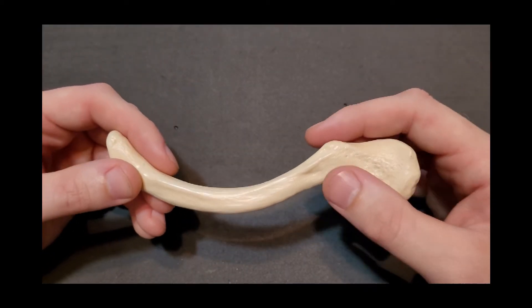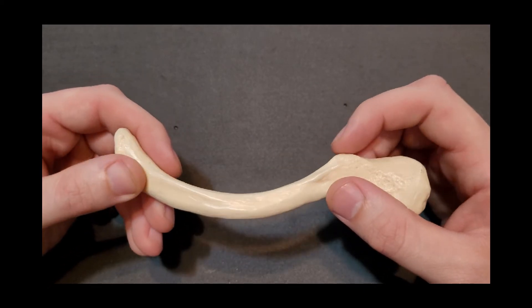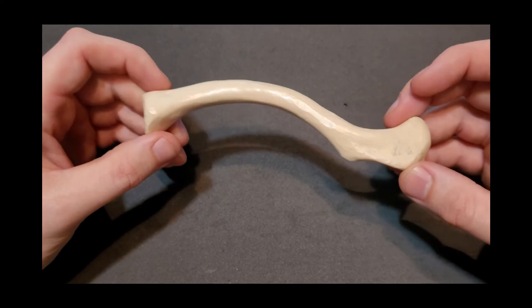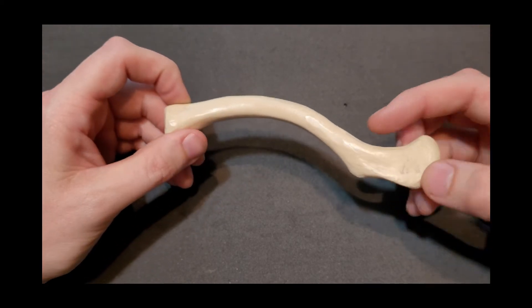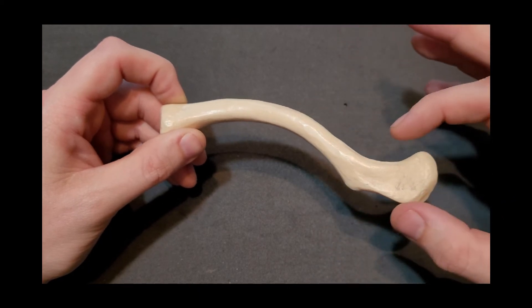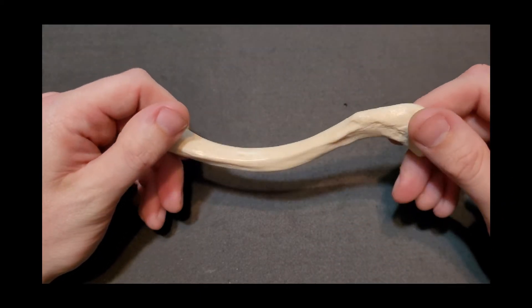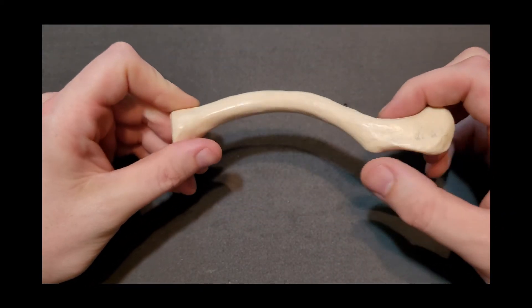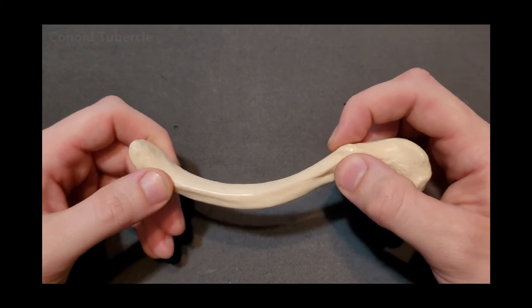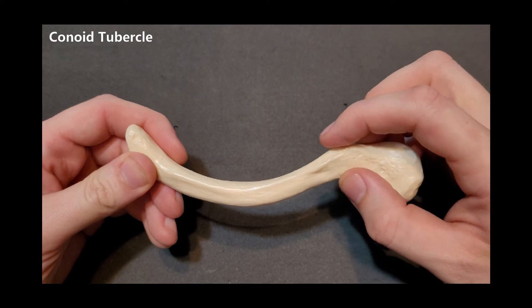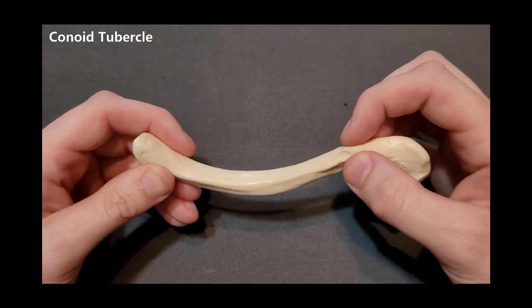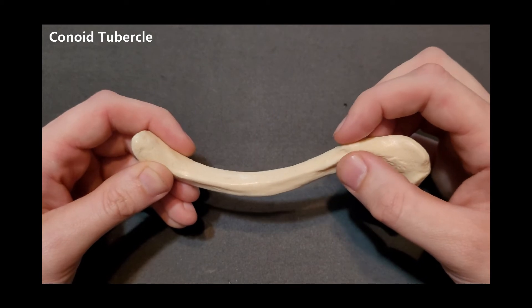I'm working my way lateral and the next thing I'm going to come across is a quite obvious bump. This is a tubercle. So if I sit this bone anatomically this landmark you can just start to see it right here is on the lateral aspect of the bone. It is on the inferior aspect and is more towards the posterior and this landmark is known as the conoid tubercle. So right in this area, conoid tubercle, and that is also for a ligament and that is known as the conoid ligament.